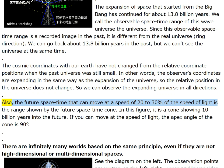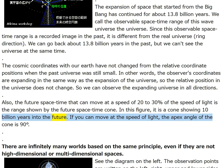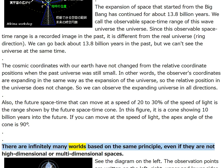The future space-time that can move at a speed of 20 to 30 percent of the speed of light is the range shown by the future space-time cone. It is a cone showing 10 billion years into the future. If you can move at the speed of light the apex angle of the cone is 90 degrees.